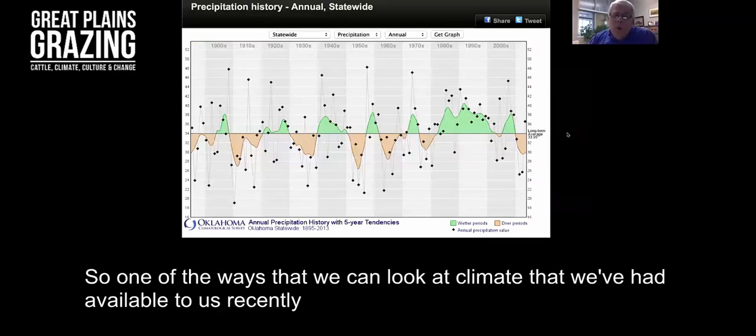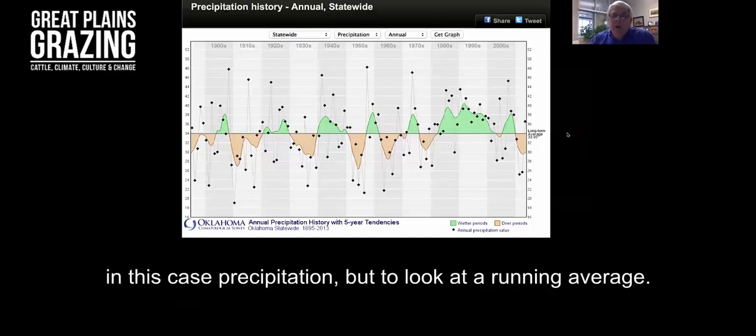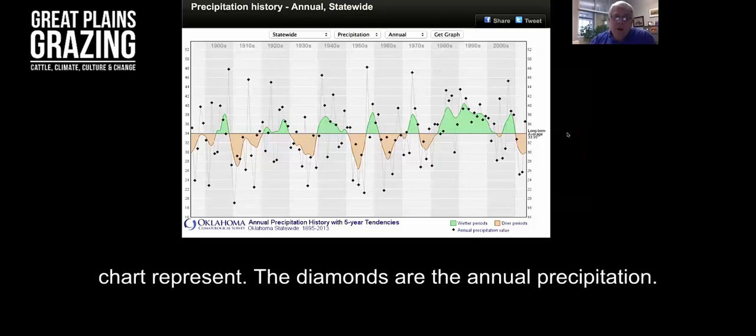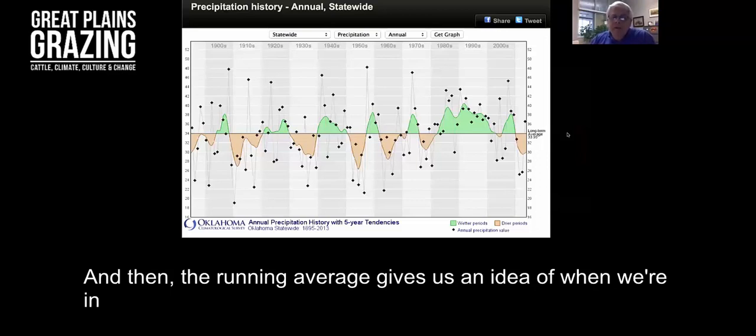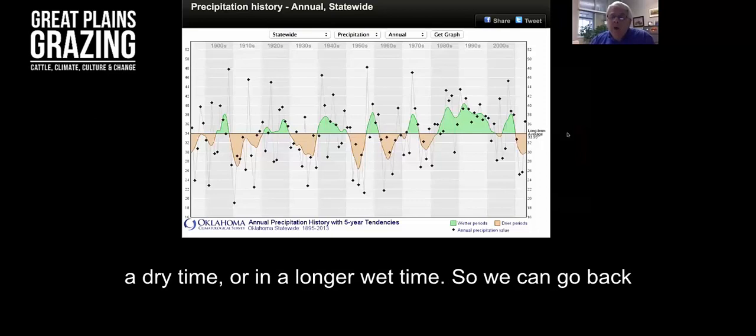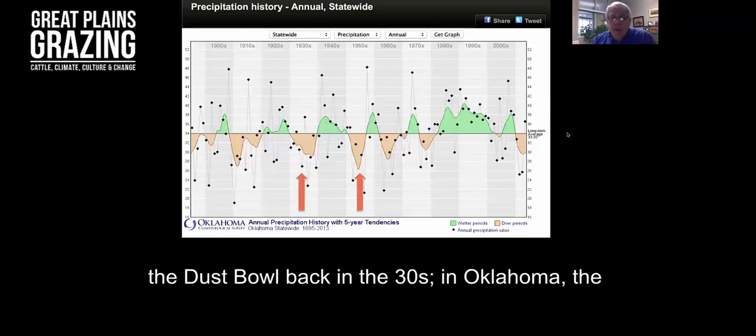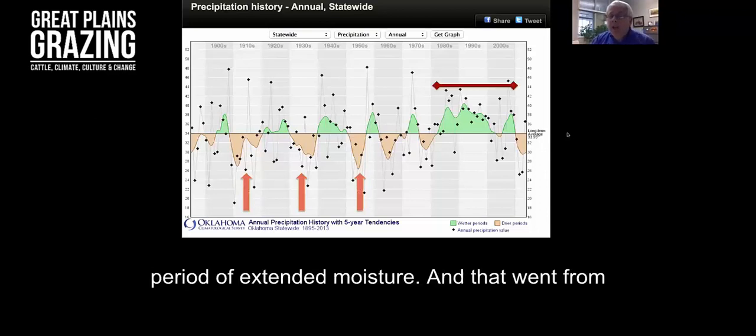One of the ways that we can look at climate that we've had available to us recently is to not just look at the annual precipitation, but to look at a running average. That's what the brown and the green fill on this chart represent. The diamonds are the annual precipitation. This would be for Oklahoma across the entire state. The running average gives us an idea of when we're in a dry time or a longer wet time. So we can go back and see those droughts that are talked about in the 50s, the Dust Bowl back in the 30s.